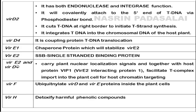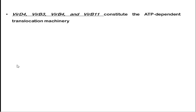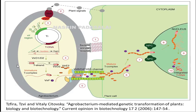After a certain concentration of phenolic compound is reached, it can kill the bacteria and act as a bacteriostatic agent. To prevent this, VirH gene encodes a cytochrome P450 oxygenase that detoxifies the harmful phenolic compound. VirD4, VirB3, VirB4, and VirB11 constitute an ATP-dependent translocation machinery helpful for T-DNA transfer.